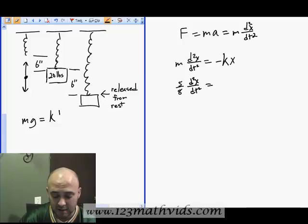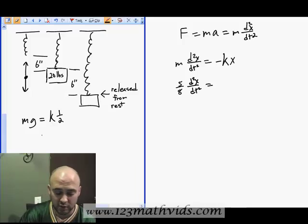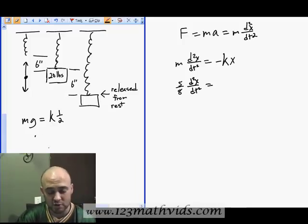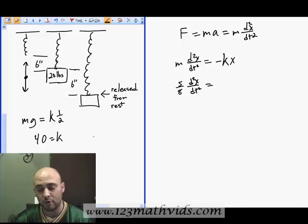I'm going to write that as half a foot instead, because I know my gravity was 32 feet per second squared. I want to keep my units the same. Mass times gravity is just that weight, that downward weight, which is 20 pounds. So 20 times 2 is 40, so my spring constant is 40. I'm going to plug that back into my equation, it's going to be negative 40 times position.